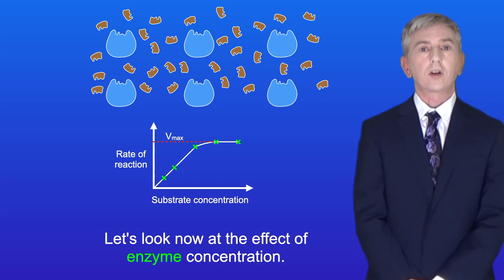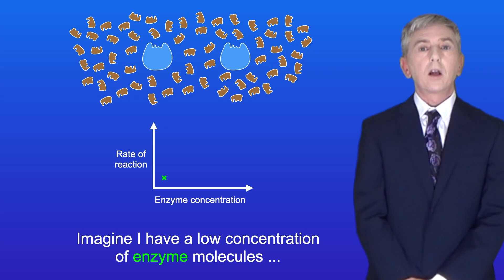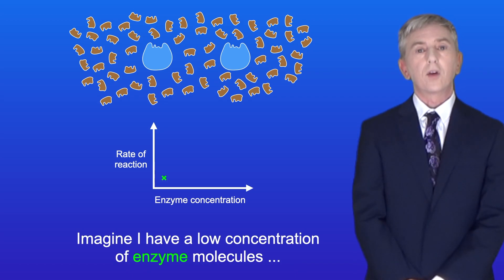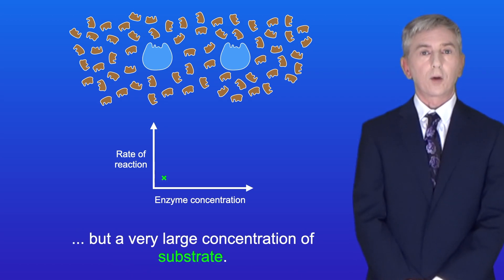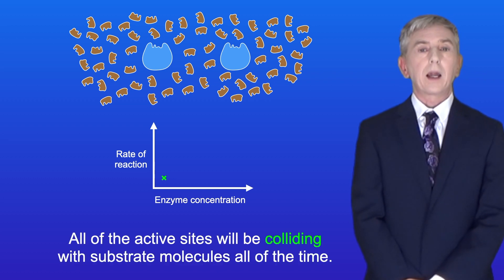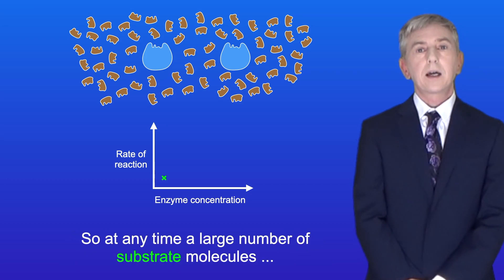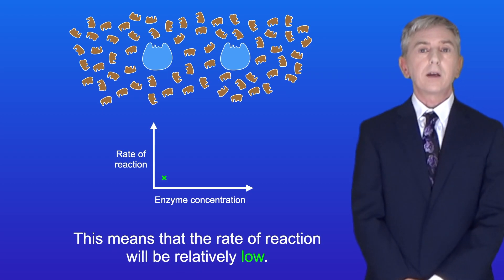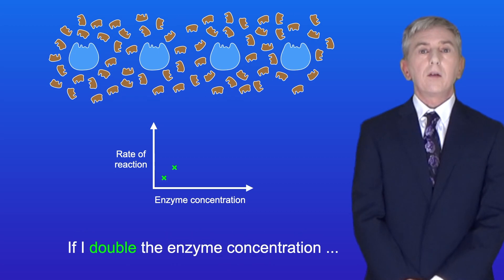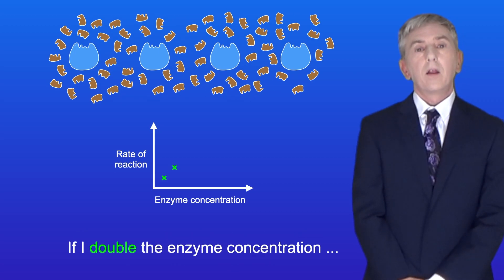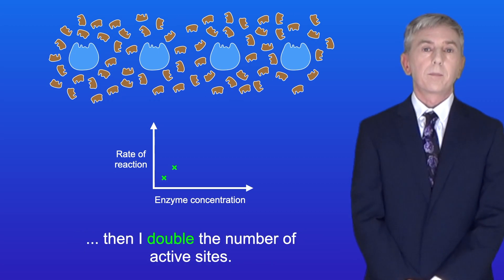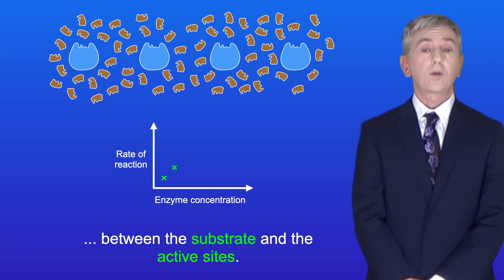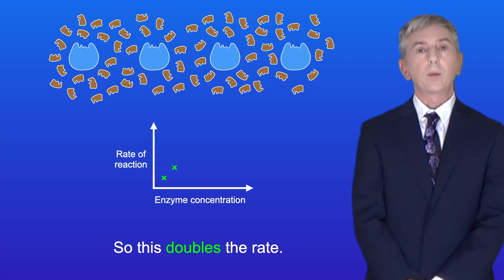Let's look now at the effect of enzyme concentration. Imagine I've got a low concentration of enzyme molecules, but a very large concentration of substrate. All of the active sites will be colliding with substrate molecules all of the time, so a large number of substrate molecules will be unable to collide with a free active site. This means that the rate of reaction will be relatively low. If I double the enzyme concentration, then I double the number of active sites. This doubles the frequency of collisions between the substrate and the active sites, so this doubles the rate.